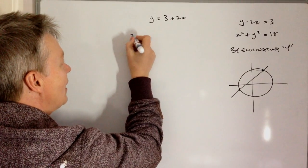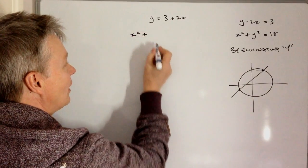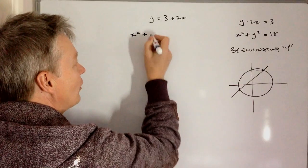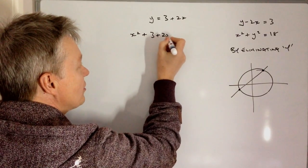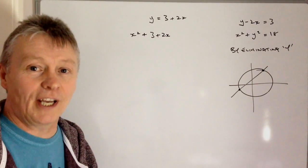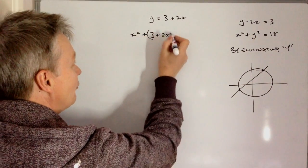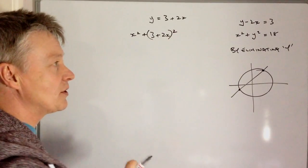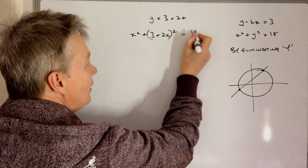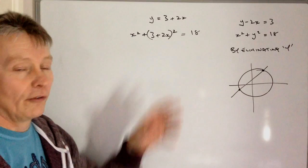So I'm going to rewrite that as x squared plus, and rather than writing y, I've got 3 plus 2x. Now just be a little bit careful here. It is a squared term, and that's one of the things you need to watch out for—that you need to make sure you square it in order to solve this.